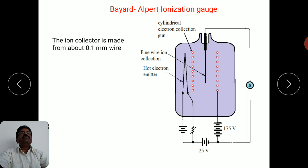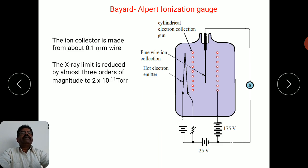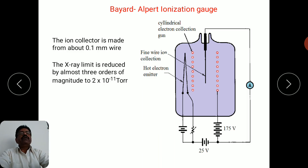Since the area of the ion collector wire is very, very small, there is less possibility that X-ray photons collected produce significant spurious current. The X-ray limit is found to be reduced by almost three orders of magnitude, up to 2 into 10 raised to minus 11 torr, compared to the earlier limit of 10 raised to minus 8 torr.